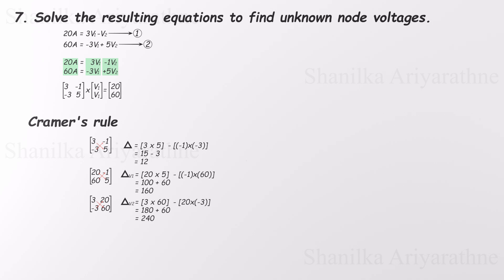Now we can directly calculate V1 and V2. V1 is 160 divided by 12, which gives us approximately 13.3 volts. V2 is 240 divided by 12, or 20 volts. And that's it. If you follow the steps carefully, Cramer's rule is a great way to solve simultaneous equations, especially in circuit analysis.